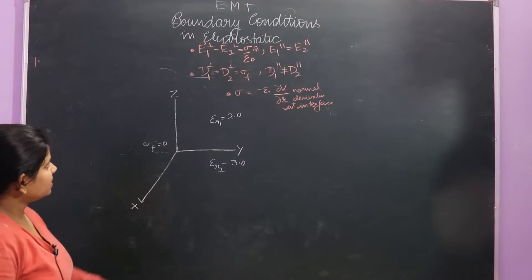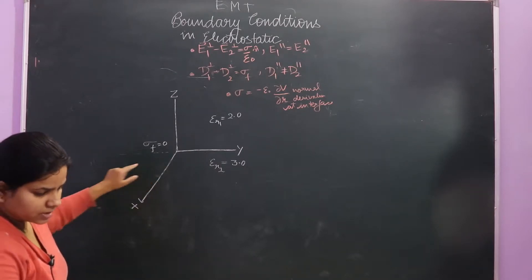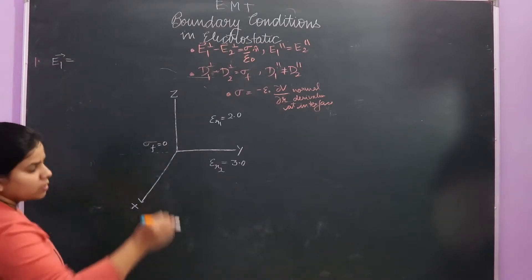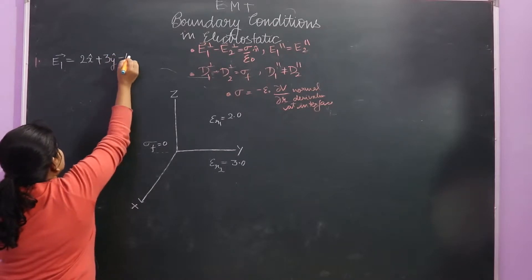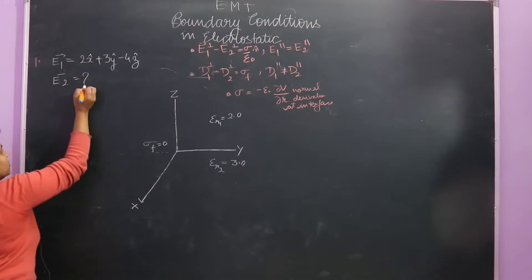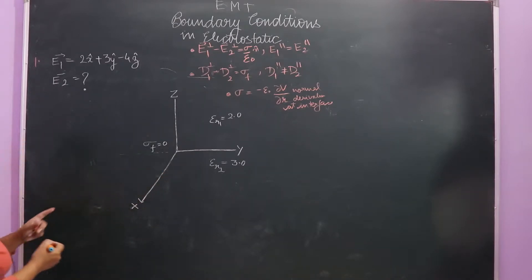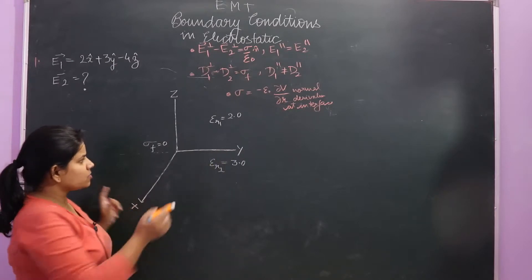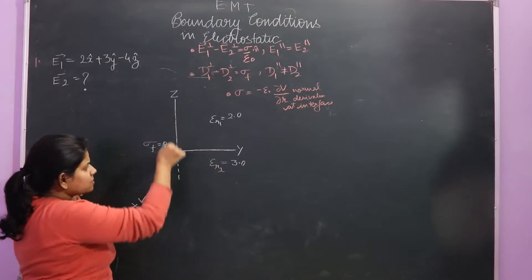Given vector E1 = 2x̂ + 3ŷ − 4ẑ V/m, find vector E2. σ_f is given as 0. The z-axis is the axis of differentiation — meaning z is perpendicular to the interface, and the x-y plane is the interface.